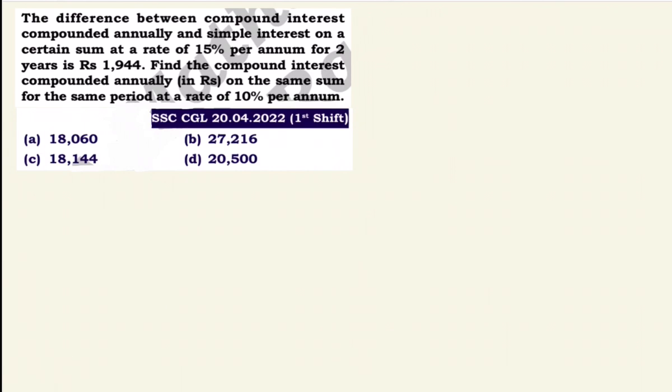Next question: The difference between compound interest compounded annually and simple interest on a certain sum at 15% per annum for 2 years is Rs.1,944. Find the compound interest compounded annually on the same sum for the same period at 10% per annum.